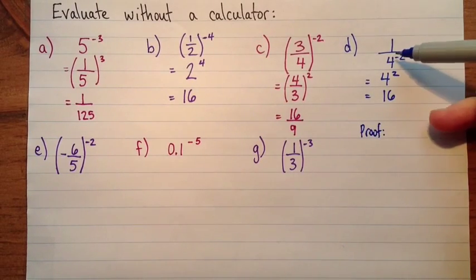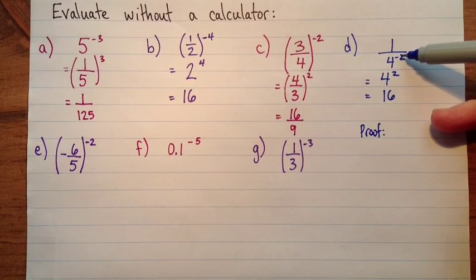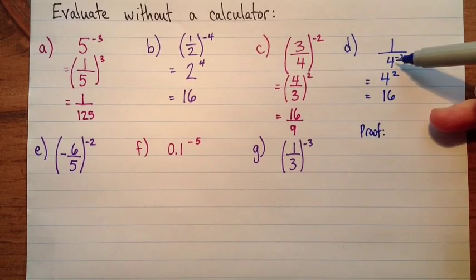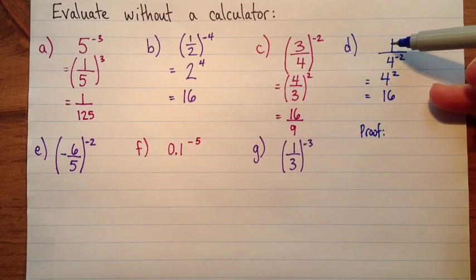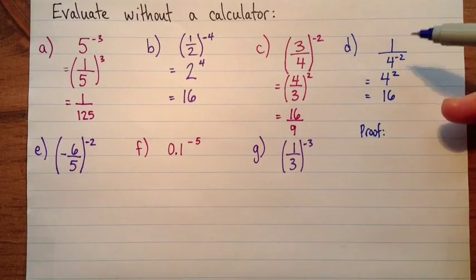So what I'm claiming is that if you have a negative exponent in the denominator, you can just change that to a positive exponent in the numerator, just sort of move it up to the top and make the exponent positive.